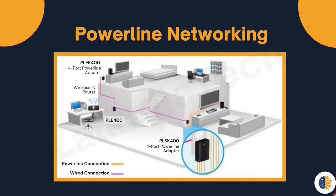Next we will discuss power line networking. Power line networking for home networks uses existing electrical wiring to connect devices. Using a standard power line adapter, devices can be connected to the local area network wherever there is an electrical outlet. In this picture, we can connect the devices to the local area network here, here, or here. No data cables need to be installed, and there is little to no additional electricity used.